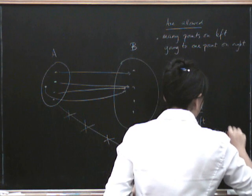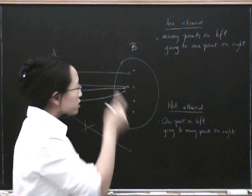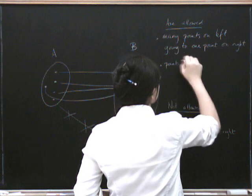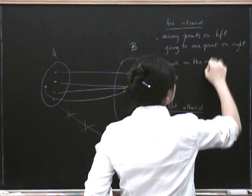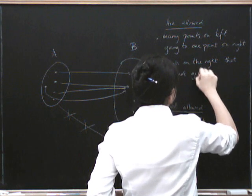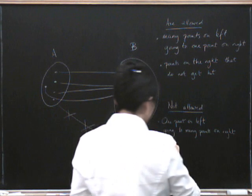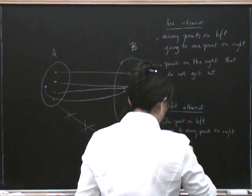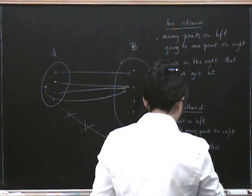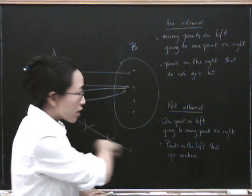Another thing we are allowed is some points on the right that do not get hit. But we're not allowed points on the left that go nowhere, and we're not allowed points on the left that go outside the right.